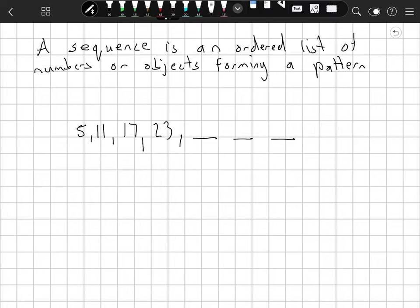A sequence is an ordered list of numbers or objects forming a pattern. Let's take a look at this first sequence here. I've got 5, 11, 17, 23, and if I gave you a second, you could probably figure out the next three terms in that sequence.